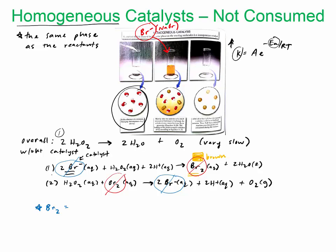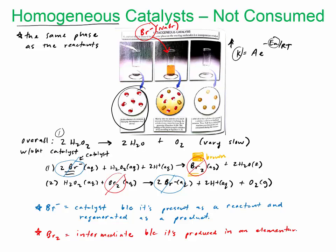One that you start with, and then you end with it at the end of the reaction. So Br minus is a catalyst, because it's present as a reactant and regenerated as a product, and Br2 is an intermediate, because it's produced in one of the elementary steps and then consumed in another.